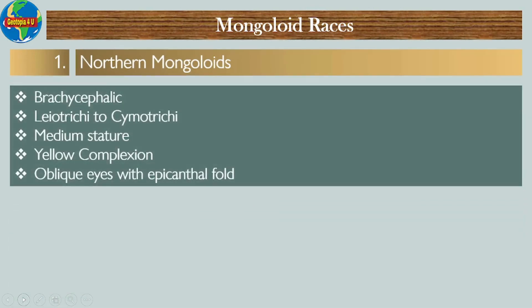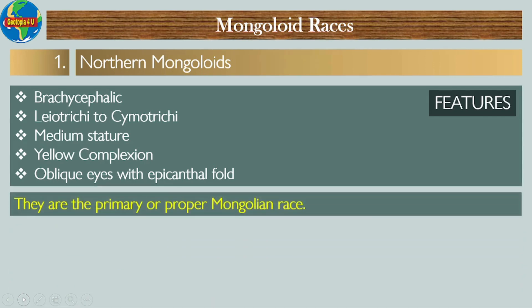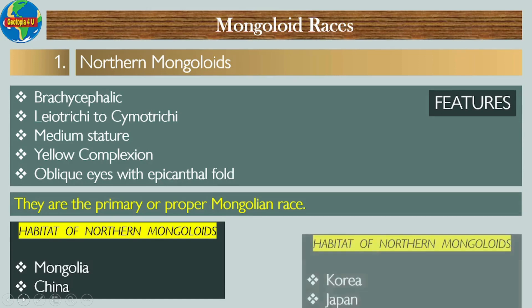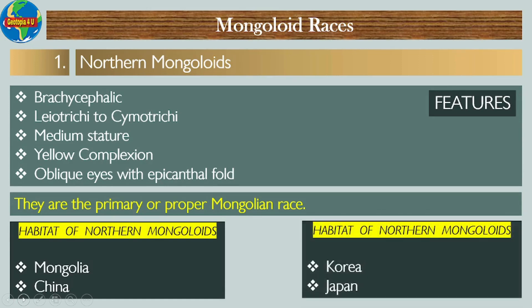Number one: Northern Mongoloids. Their features include: they are brachycephalic; they have leiotrichous to cymotrichous hair; they are medium-statured; they have a yellowish-brown complexion; and they have oblique eyes with epicanthal folds. They are the primary or proper Mongolian race. The habitat of Northern Mongoloids includes Mongolia, China, Korea, and Japan.